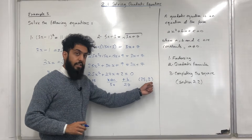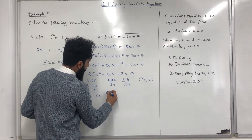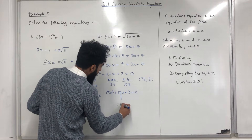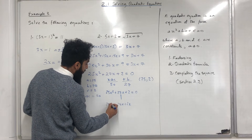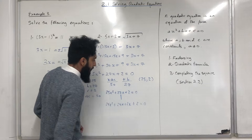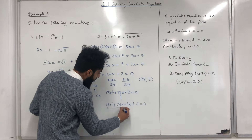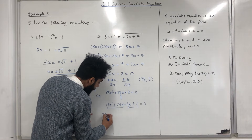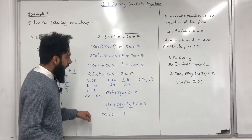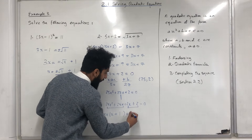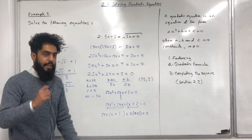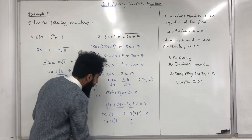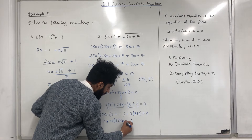So, 25X² + 25X + 2X + 2 = 0. Factorising the first component gives 25X(X + 1). Factorising the second component gives 2(X + 1). The common factor is (X + 1), so the factorised form is (X + 1)(25X + 2) = 0.